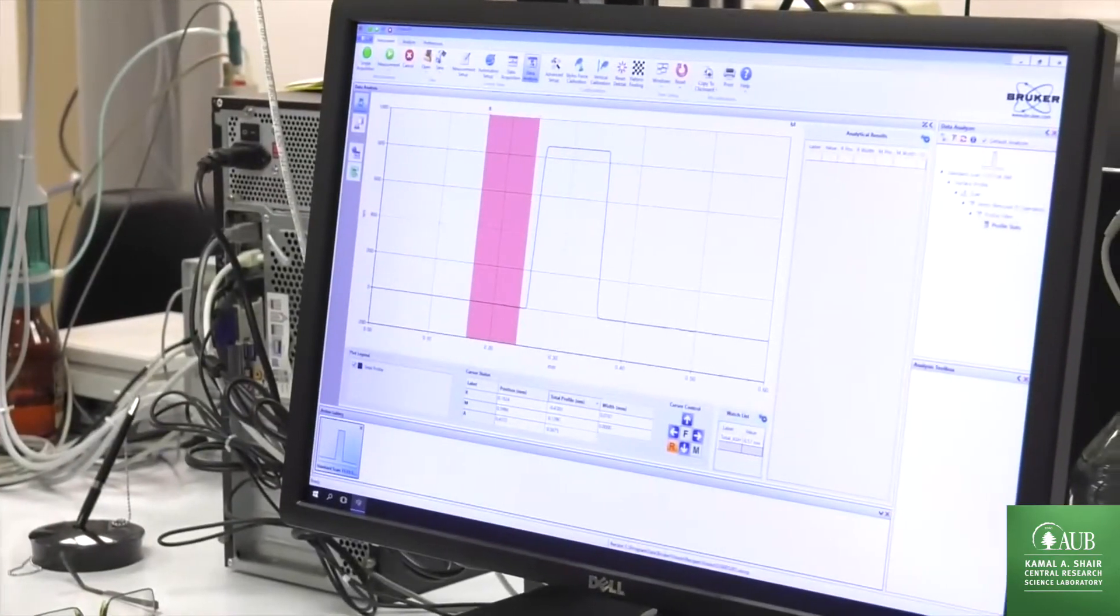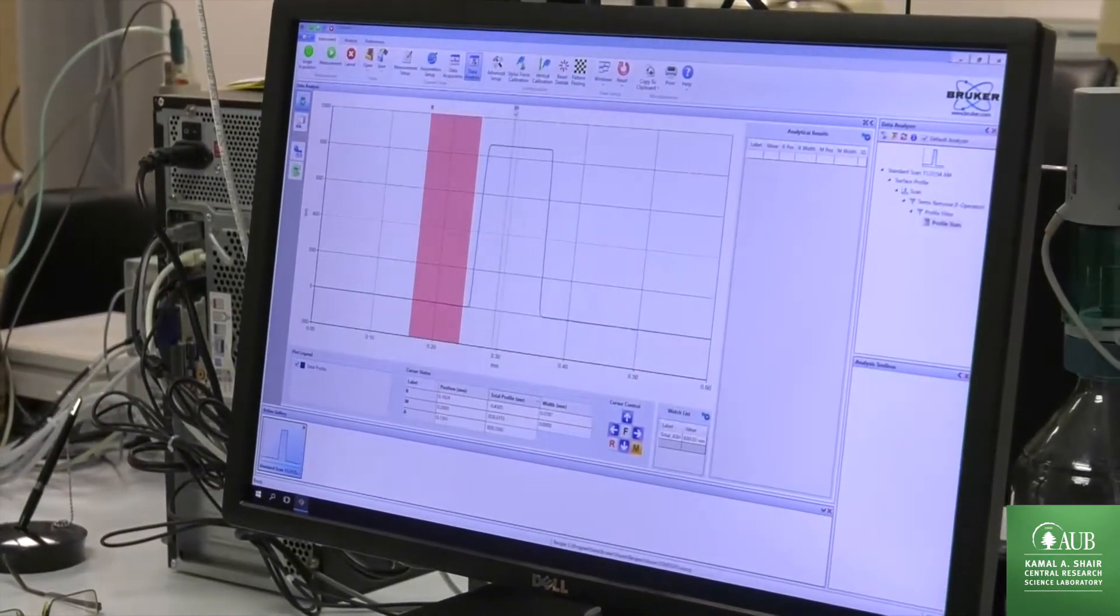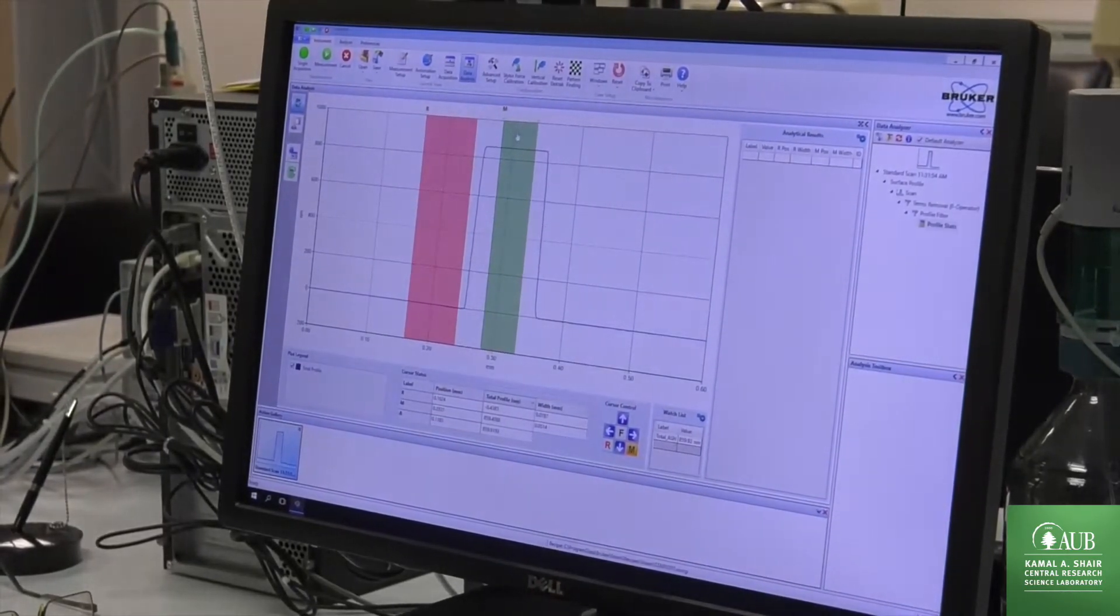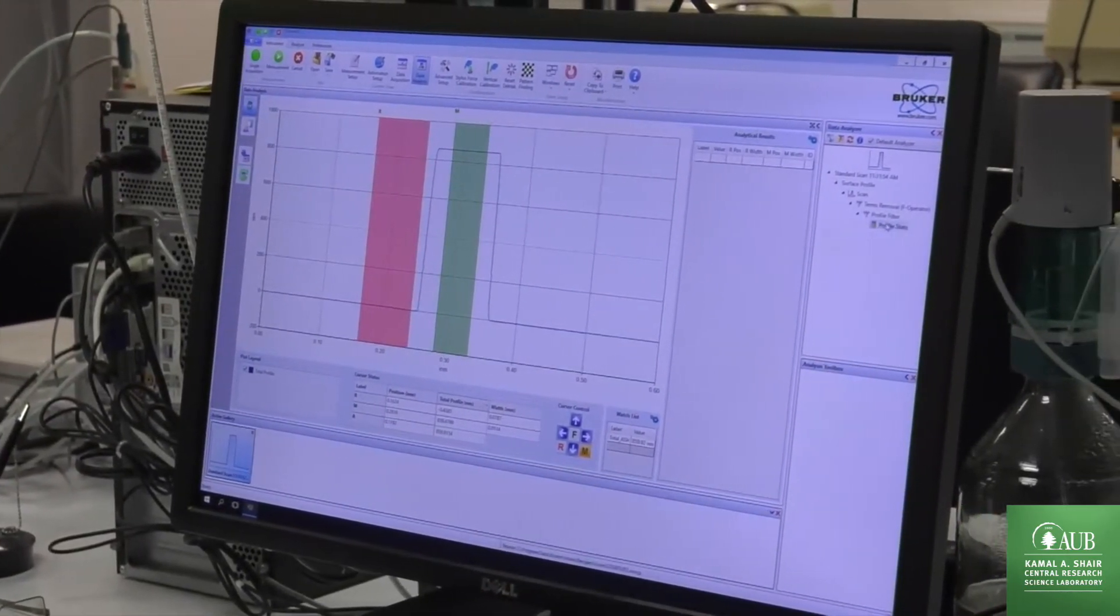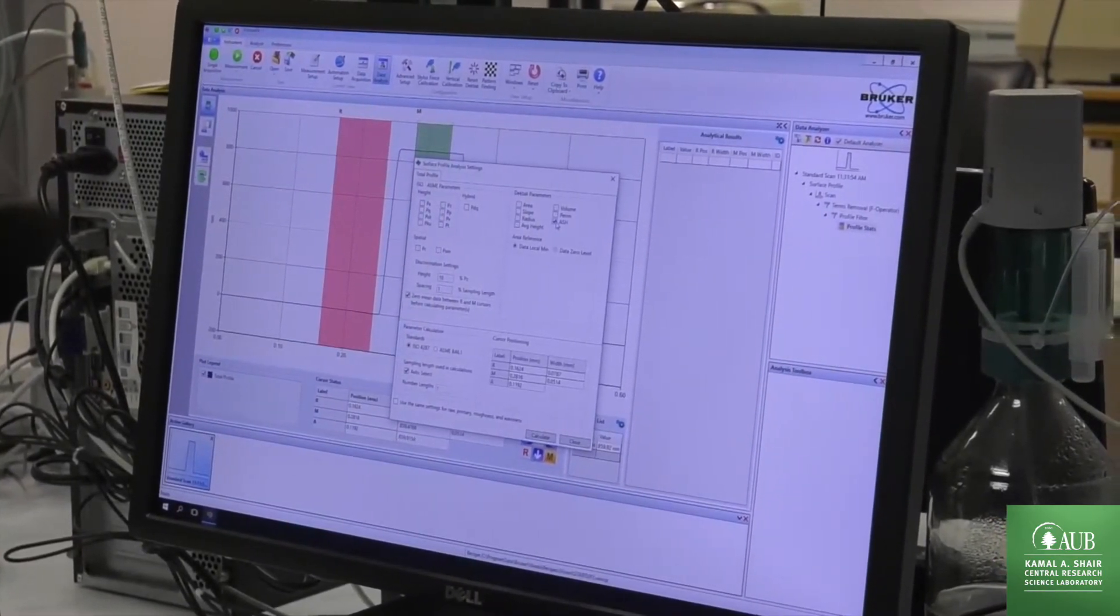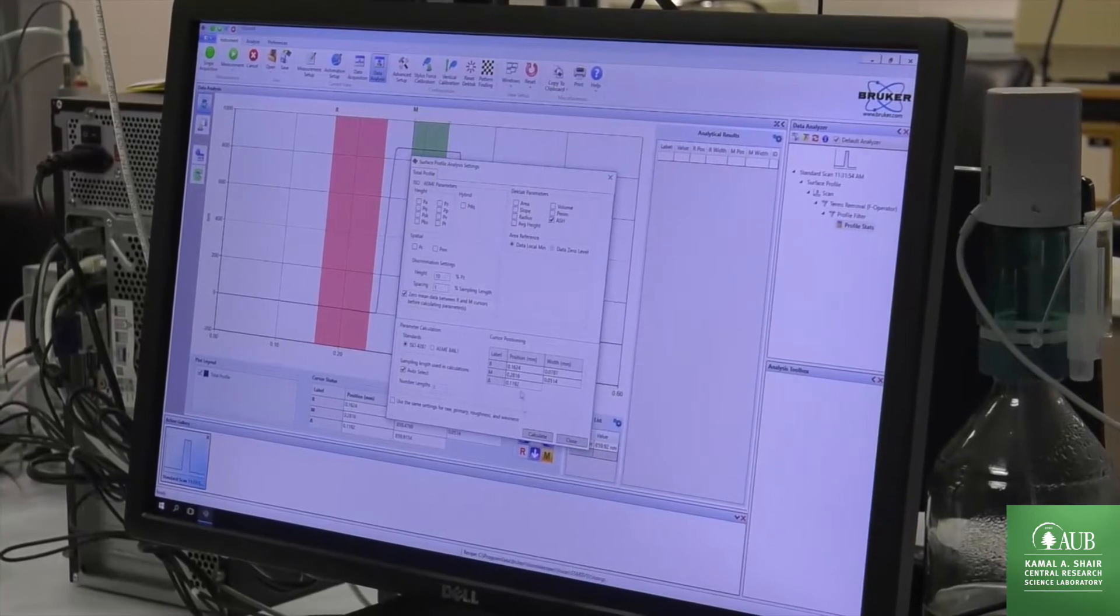We place a reference cursor on the low plateau and the measurement cursor in the center of our elevated feature and we click on edit settings and say please calculate the average step height with these cursor positions.